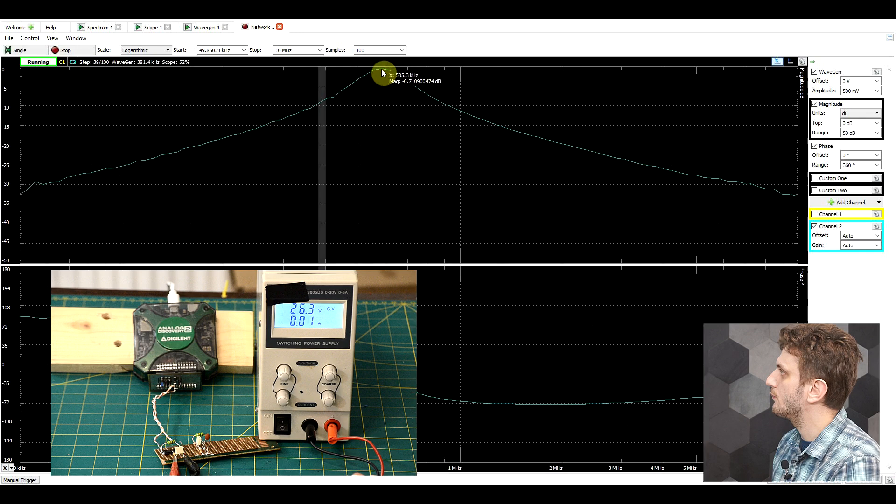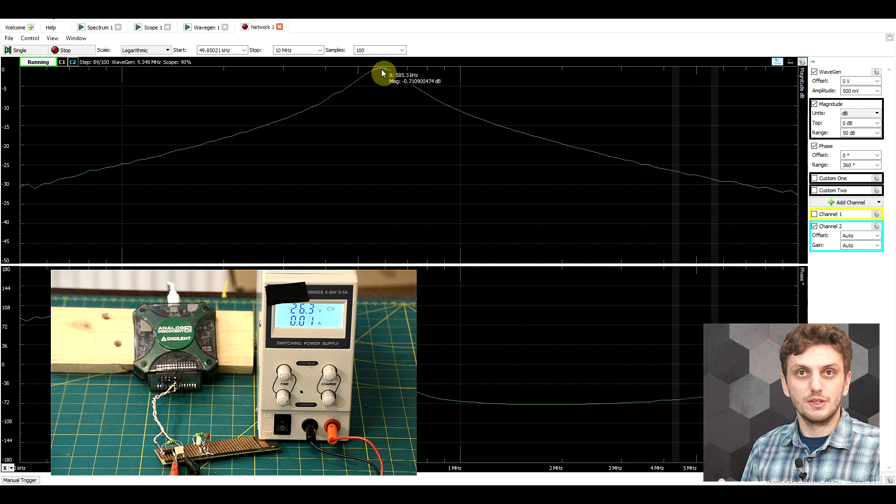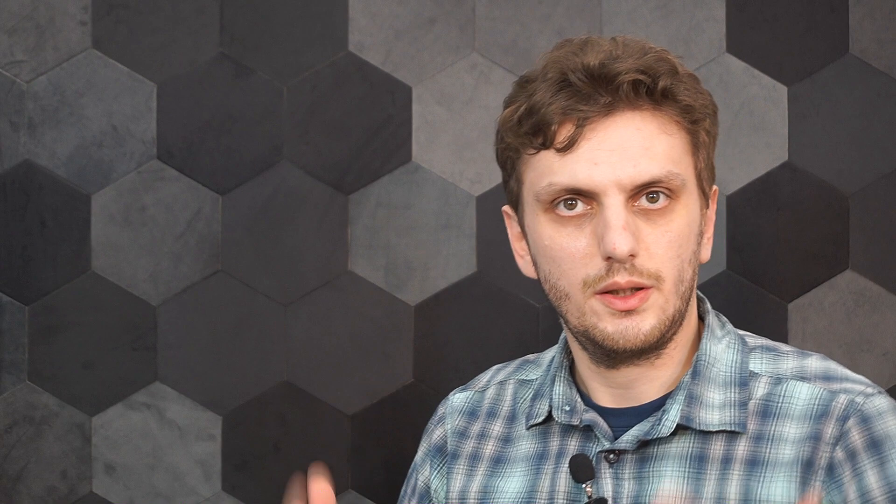So with these diodes, we go up to about 580 kilohertz. So it's not as large a difference as before, but that depends on the diodes and the exact setup.